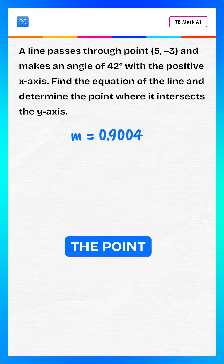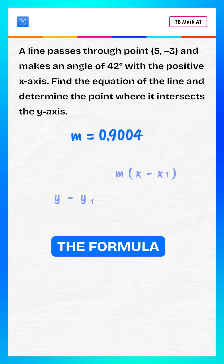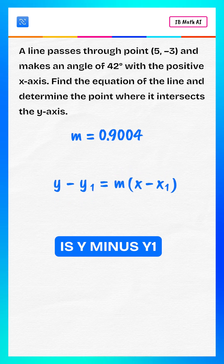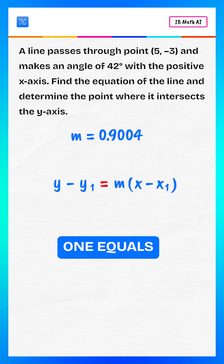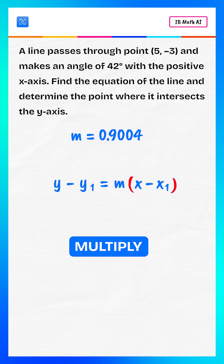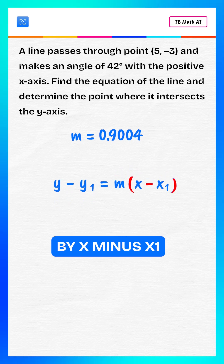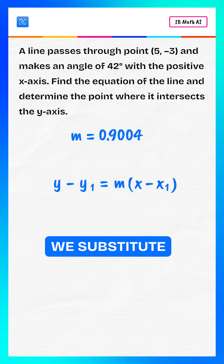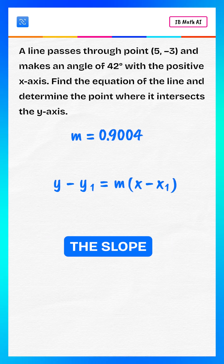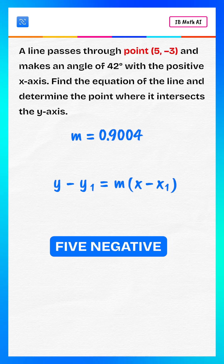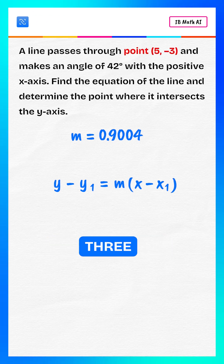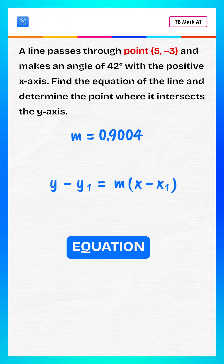Now we use the point-slope form of a line. The formula is y minus y1 equals m multiplied by x minus x1. We substitute the slope and the point negative 3 into the equation.